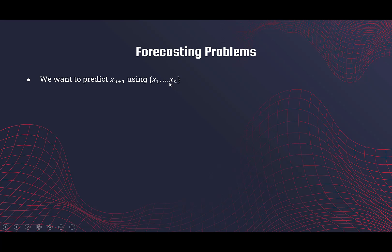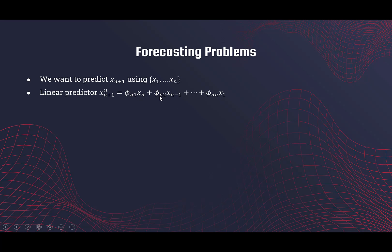This is specifically one-step-ahead forecasting. A linear predictor of X_{n+1} — we have been denoting it this way — means we are predicting n+1 based on n values X_1 through X_n. We are using these notations, denoting the linear predictors with coefficients that have double subscripts. The first subscript denotes how many terms are in the model — there are n terms here.